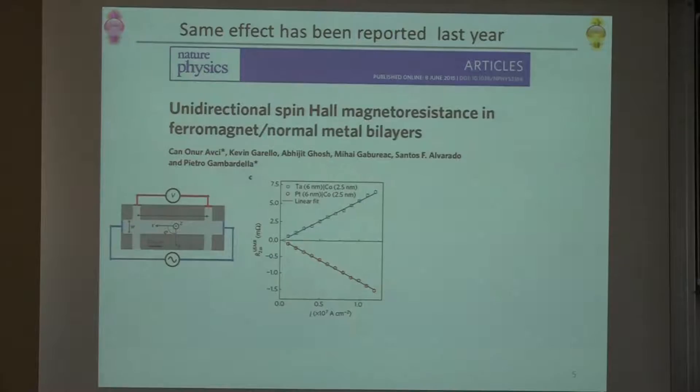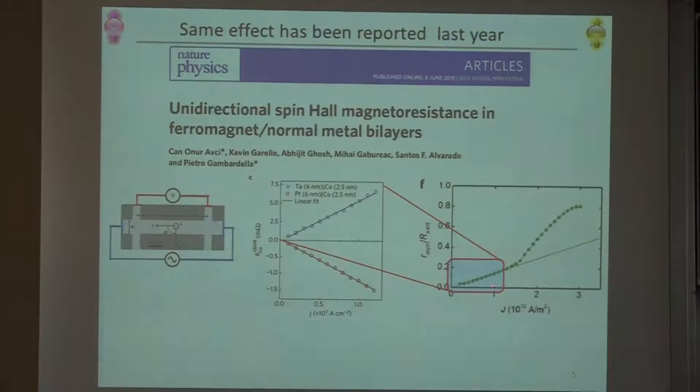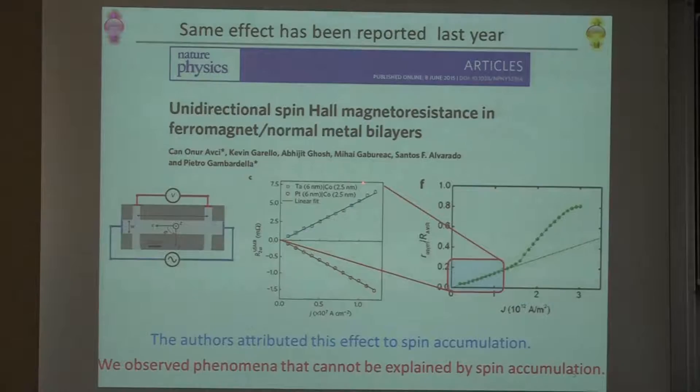Last year we found the group of Pietro Gambardella actually reported, I think, the same effect. They measured by using second harmonic methods for tantalum-cobalt and platinum-cobalt. The MR sign is different. If you compare their result to ours, this is a linear regime in our result. But in this paper, they attributed the mechanism to spin accumulation, and named this phenomenon as unidirectional spin-Hall magnetoresistance.